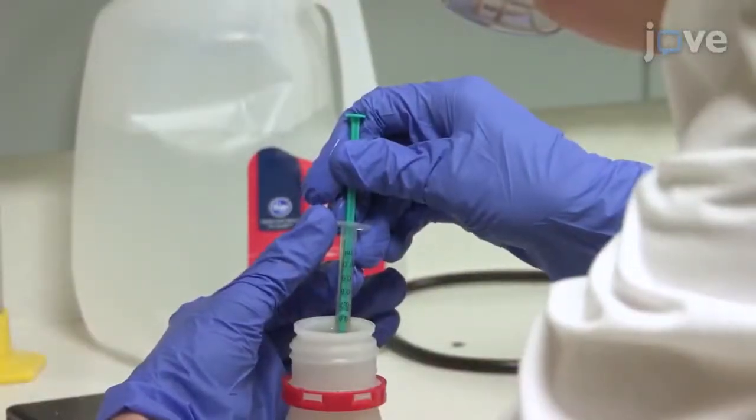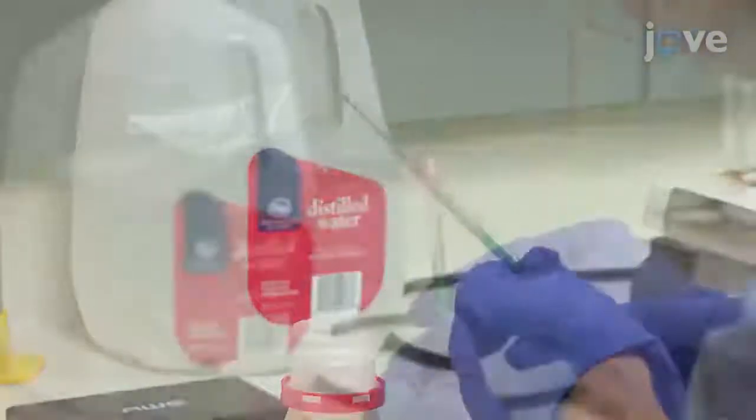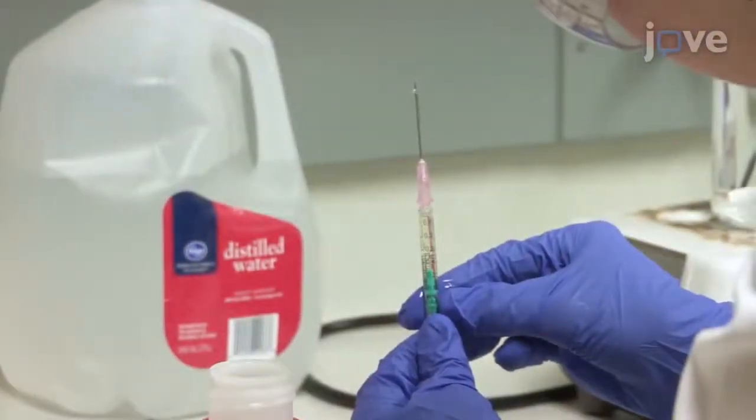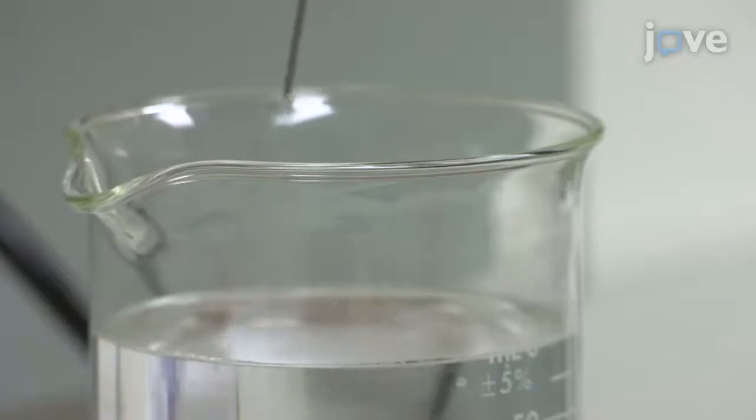Next, use a syringe to measure 0.6 milliliters of the water-soluble surfactant. Make sure there are no air bubbles. Hold the needle a few millimeters over the center of the solution and slowly release the water-soluble surfactant to avoid splatter on the walls of the beaker.